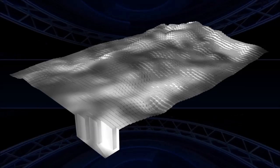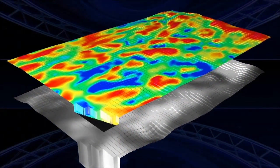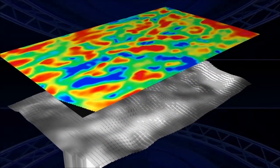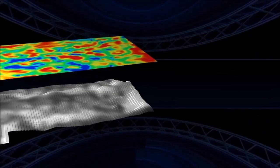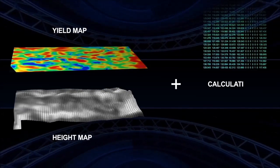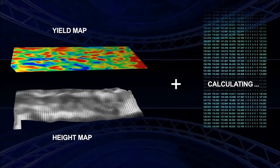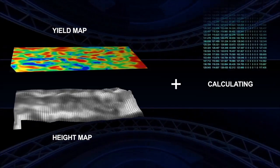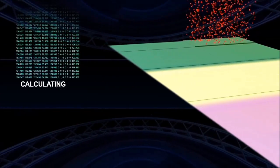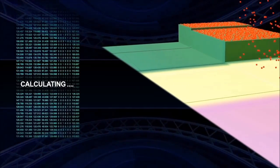The creation of a prescription map involves yield maps, elevation maps, and a host of other variables not shown in this video. The calculations are complex and can take several hours, but the result is a simple map that matches the seed and fertilizer to the hydrology and pattern of high and low yields.